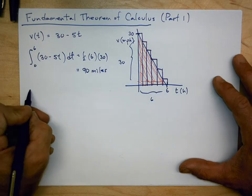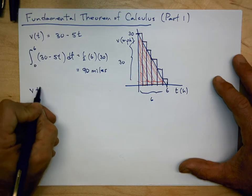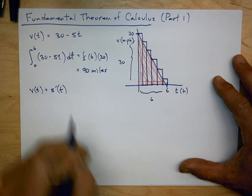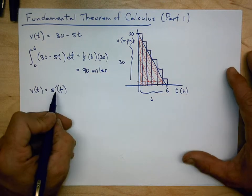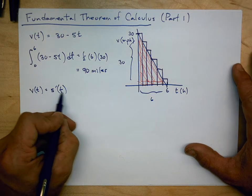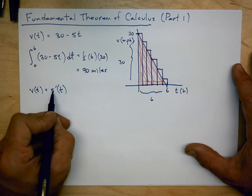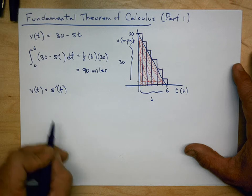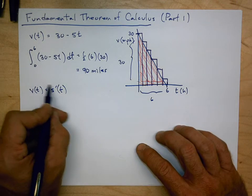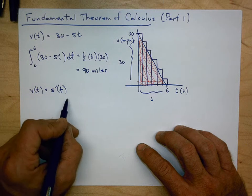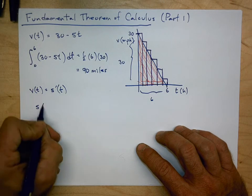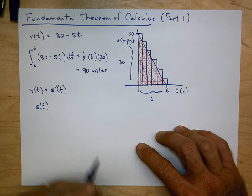That's one way to determine the distance traveled during those 6 hours, just by finding the area underneath the curve. But we also know that velocity is the derivative of distance — the instantaneous rate of change of distance with respect to time is velocity. So another way to think about this is: if I can find the antiderivative, in other words, if I know s′(t), can I find s(t)?